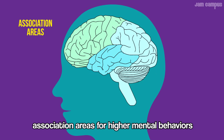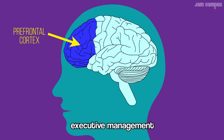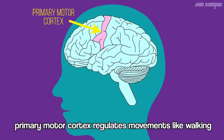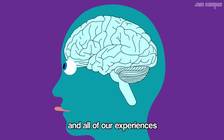The basal ganglia helps with fine-tuned behaviors. The olfactory bulb determines how we smell flavors. Association areas handle higher mental behaviors. The prefrontal cortex, up in the front end, handles executive management. The primary motor cortex regulates movement like walking, and controls our senses and all our experiences.